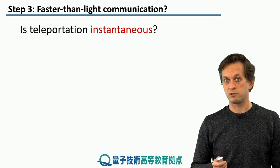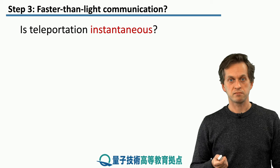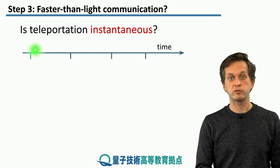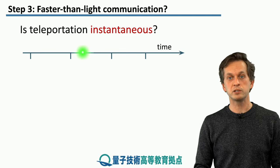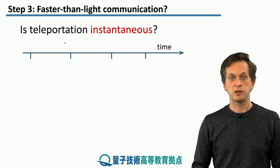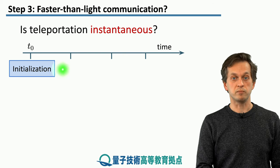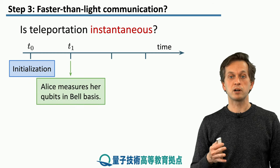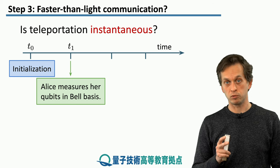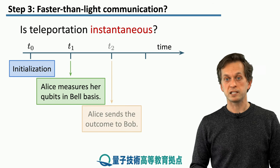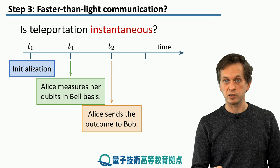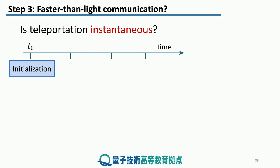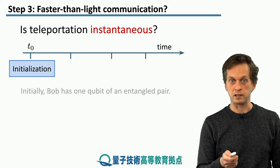Now let's ask a second interesting question: is teleportation instantaneous? Can we communicate faster than the speed of light? To answer that question, we have to consider the timeline of events during our teleportation protocol. We start at time t0 when we initialize our system and create our initial state. At some later time t1, Alice performs her measurement in the Bell basis on the two qubits she has. Then at some later time t2, Alice sends the outcome of the measurements to Bob, and he receives these outcomes at time t3. Let's go step by step and consider what is going on with Bob's state.